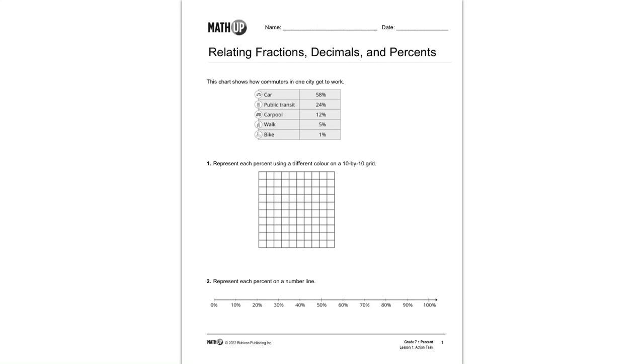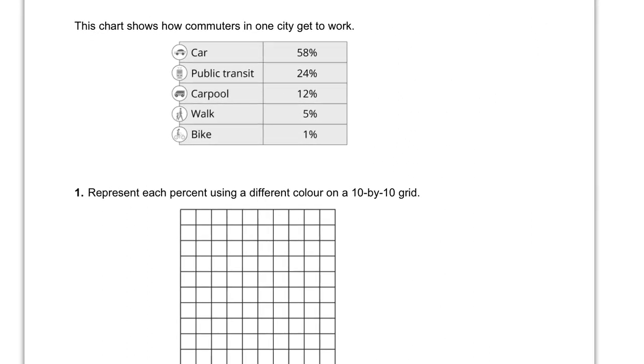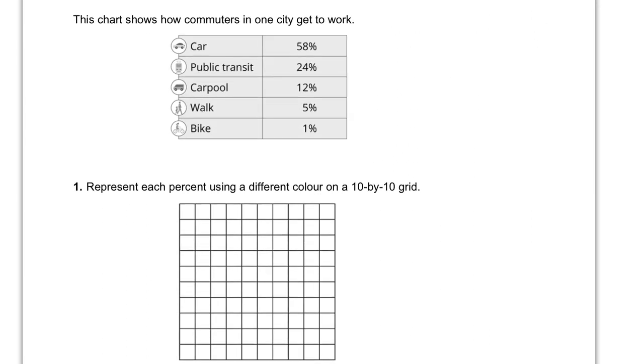What's up folks? Welcome to Math Walkthroughs with Mr. Wiebe. Today we are relating fractions, decimals, and percents in our Lesson 1 action task. Let's see what that first task brings us. First we see a chart that shows how commuters in one city get to work, and then they ask us to represent each percent using a different color on a 10x10 grid.